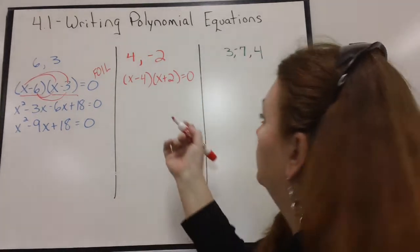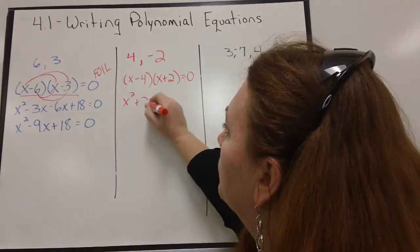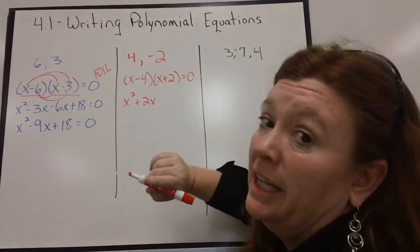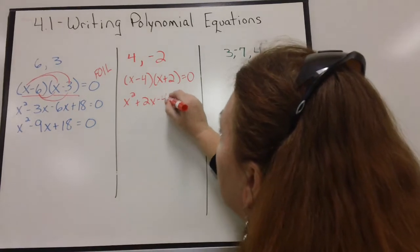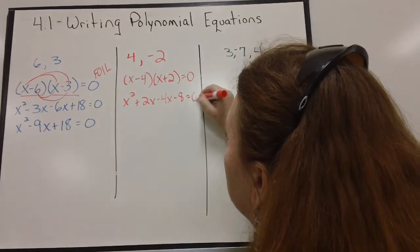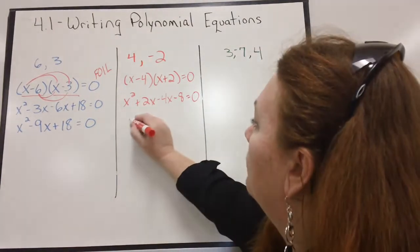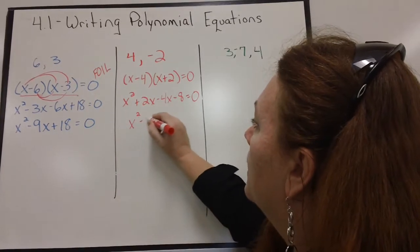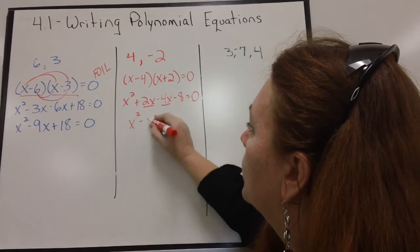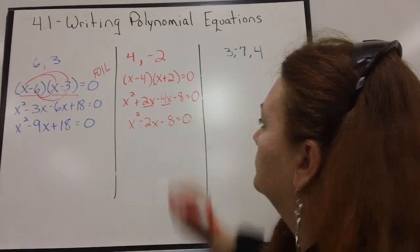Now, all I do is use FOIL. First, X squared. Outer, plus 2X. Inner, negative 4X. And last, negative 4 times 2 is negative 8. Simplify it. Combine like terms. My final answer is X squared. 2X minus 4X is a negative 2X minus 8 equals 0. And there's my answer.